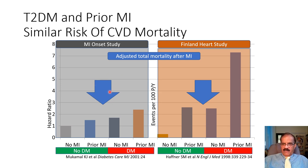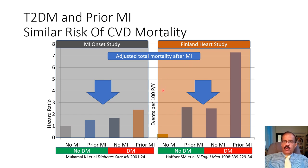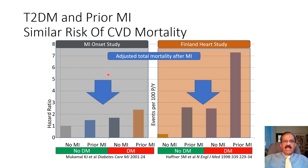Just as someone who develops a myocardial infarction is highly motivated to change their lifestyle, we need to explain to our type 2 diabetic patients with 10 years of disease that the same thing can happen to them. They need to intensify their lifestyle changes so they don't develop a coronary event.